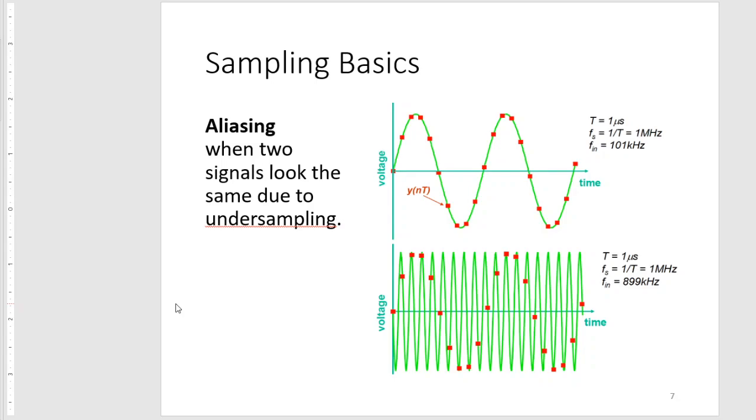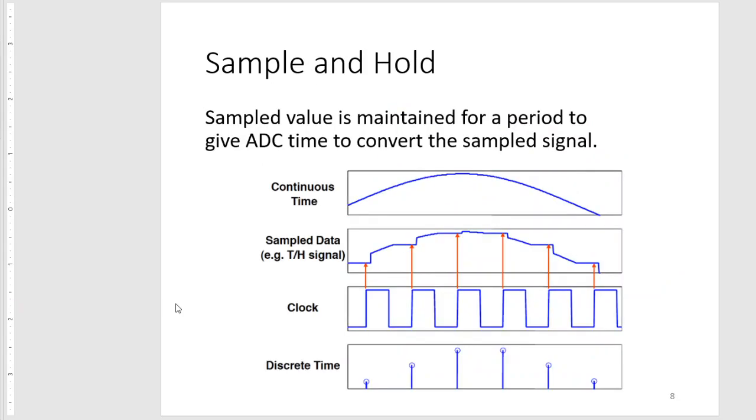In addition to normal sampling, we have sample and hold, wherein the sample value is maintained for a period of time to give the ADC time to convert the sampled signal. At every time the clock is high, our sample data follows the continuous time signal. But when the clock is low, the data stays at the last observed value. Sample and hold is usually used whenever our conversion does not happen very fast.